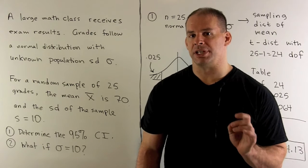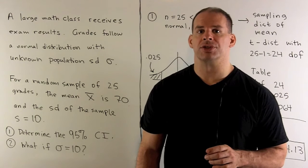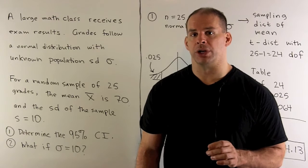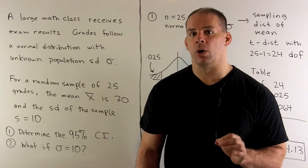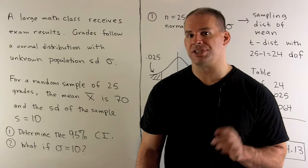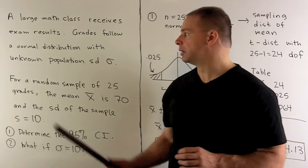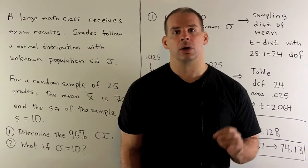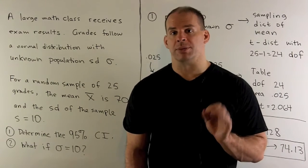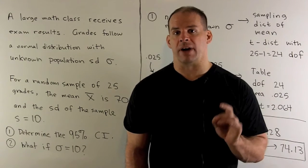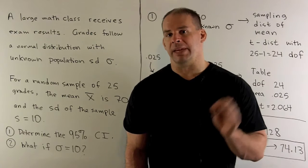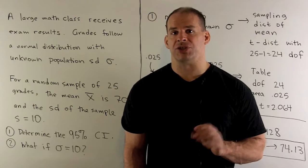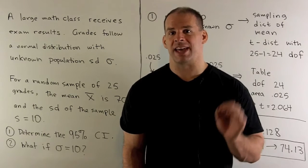A large math class receives exam grades. The grades follow a normal distribution with an unknown population standard deviation, sigma. We draw a random sample of 25 grades. The mean of the sample is 70, and the standard deviation of the sample is 10.